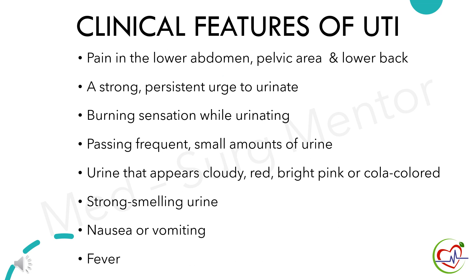Commonly seen clinical features of urinary tract infection are: pain in the lower abdomen, pelvic area, and lower back; a strong persistent urge to urinate; burning sensation while urinating; passing frequent small amounts of urine; urine that appears cloudy, red, bright pink, or cola-colored; strong-smelling urine; nausea and vomiting; and fever.